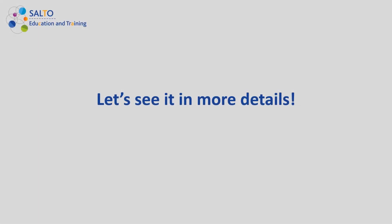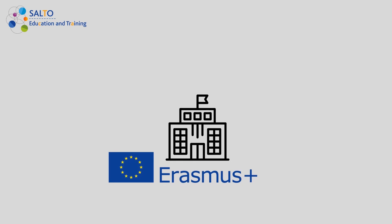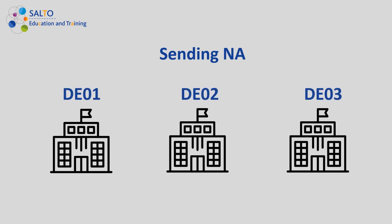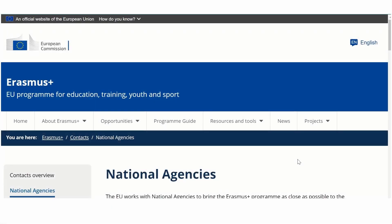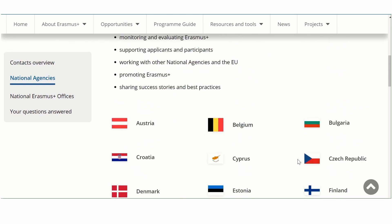The national agency that represents the Erasmus Plus program in your country will correspond to your sending NA. In some countries there's only one national agency, in others there are more, usually representing different sectors. You can check which one belongs to you on the official Erasmus Plus website. You can find the link in the video's description below.